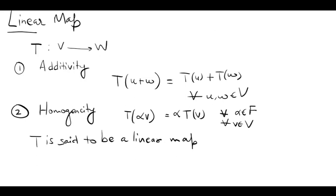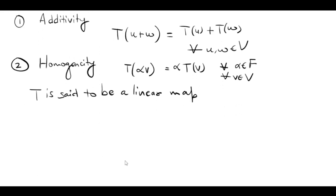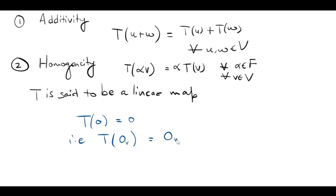A quick observation: if you choose lambda to be 0, or if you take U and W to be the zero vector, you can prove that the linear map T maps the zero vector of V to the zero vector of W.